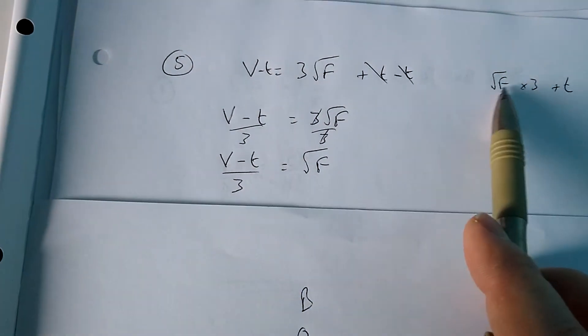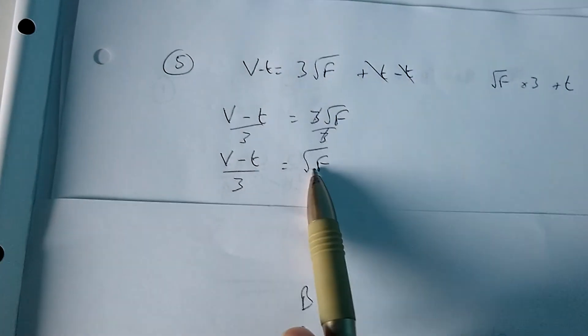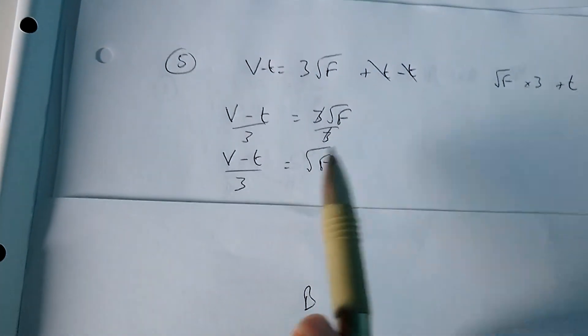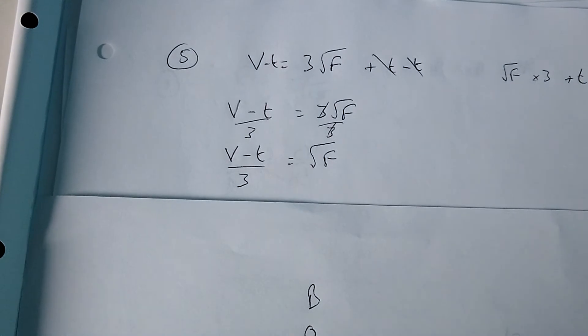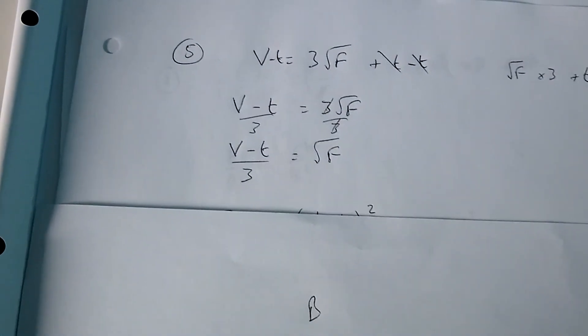What's left to do is find the inverse of the square root of f, or to undo square rooting f. So the inverse of a square root is a square, so I need to square both sides.